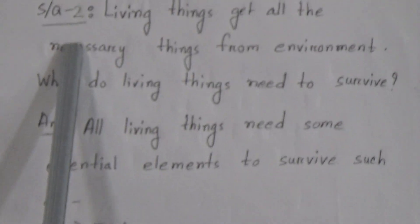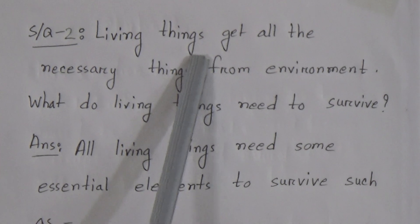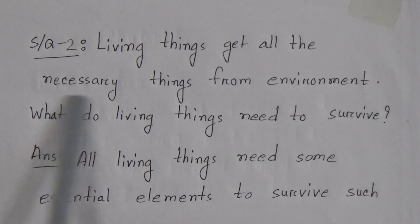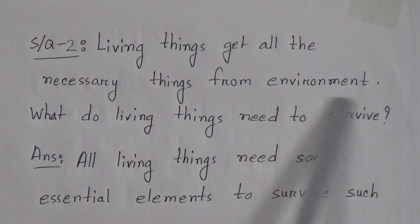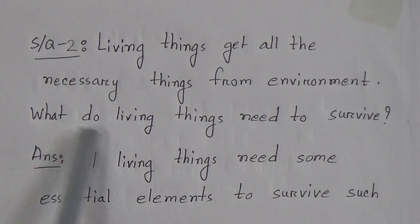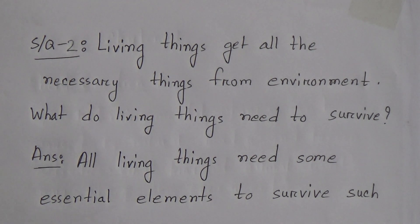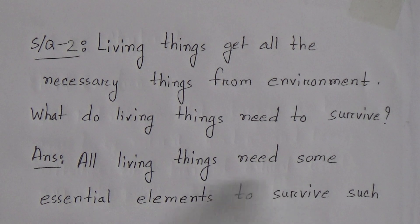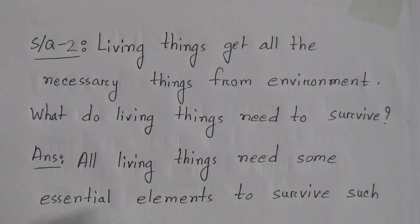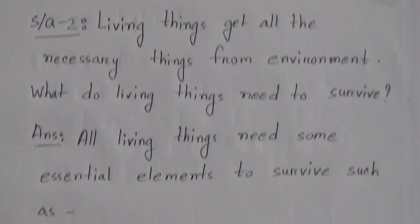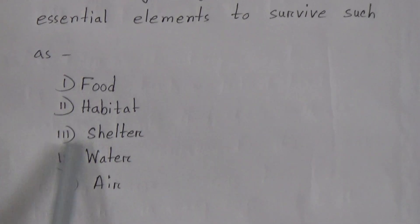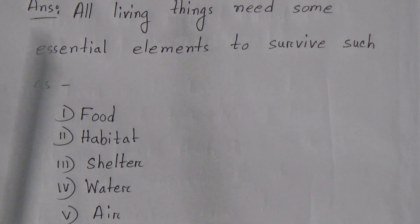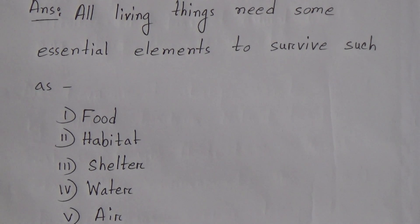Short question 2: Living things get all the necessary things from the environment. What do living things need to survive? Answer: All living things need some essential elements to survive, such as food, habitat, shelter, water, and air.